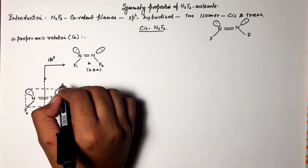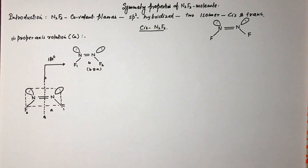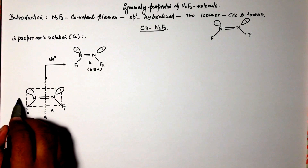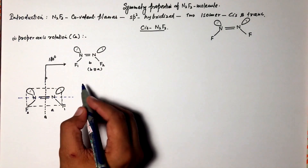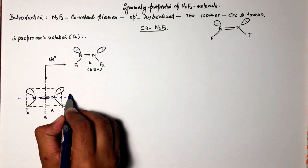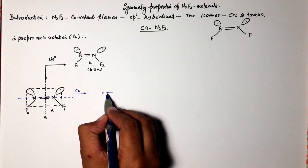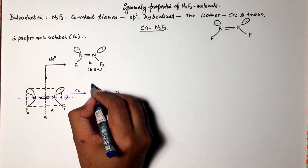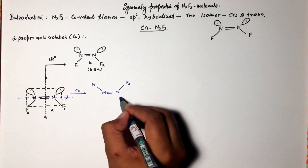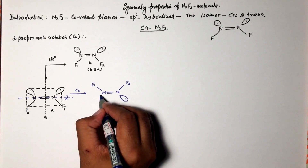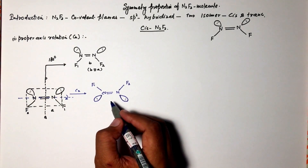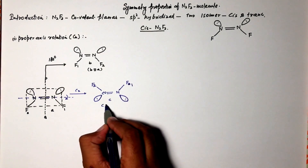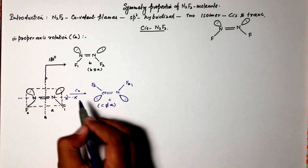In this molecule there are many axes, but those axes are not proper axes of rotation. For example, one axis passes through the two nitrogen atoms and bisects the line joining the fluorine and the orbital containing the lone pair of electrons. When we perform the C2 operation about this axis, we get a new configuration in which the fluorine positions change. This new configuration is totally different from the original one — F2 and F1 have exchanged — so the new configuration is not equivalent to the original one. That is why this axis is not a proper axis of rotation.